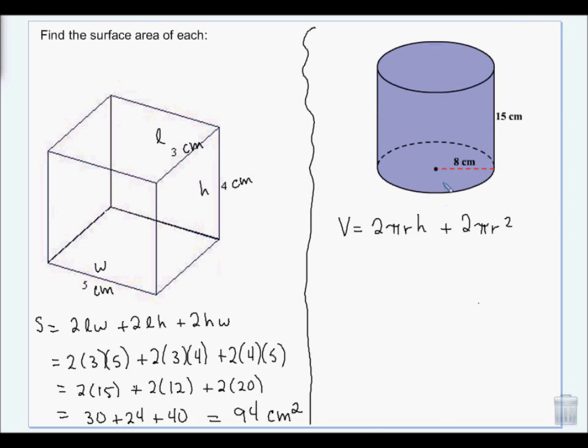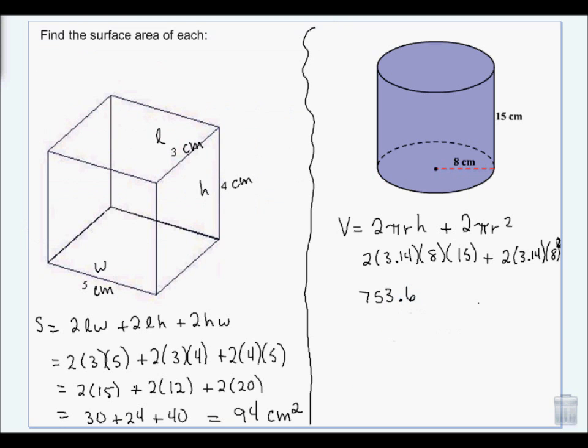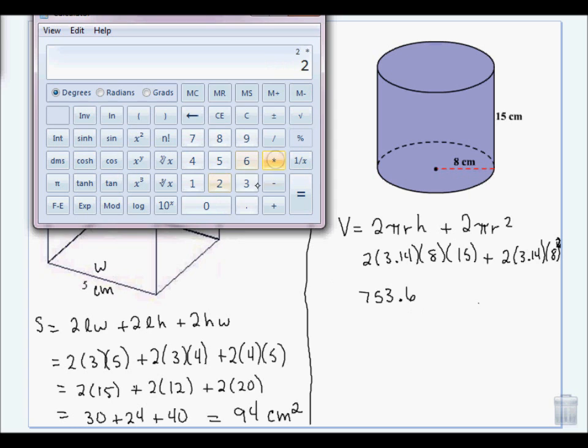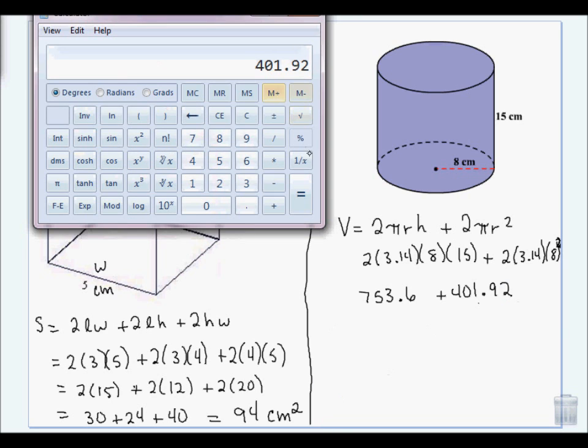So I have the volume of the cylinder is 2 pi r h, plus 2 pi r squared. Well, pi is 3.14. My radius is 8, and my height is 15. That's a little 8 squared right there. It's tiny, sorry. So I'm going to do 2 times 3.14 times 8 times 15. And that gives me 753.6. And then I do 2 times 3.14 times 8 squared. So 8 squared is 64. And I add those together.